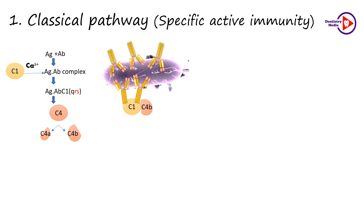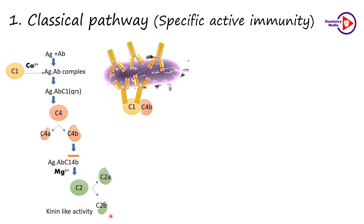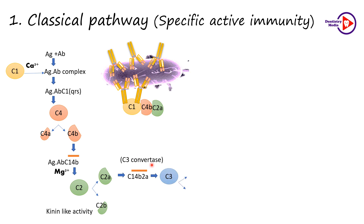C1S is an enzyme esterase which is required for splitting the next complement component, C4, into C4A and C4B. C4B joins the cascade. In the presence of magnesium, C4B splits the molecule C2 into C2A and C2B. C2B has kinin-like activity and increases permeability. C2A is the larger molecule which joins the cascade to form the compound C1-4B-2A, which has enzymatic activity. They are called C3-convertase because they split C3 into C3A and C3B.